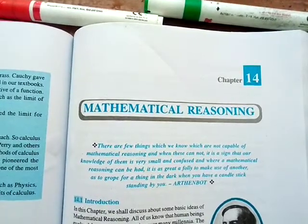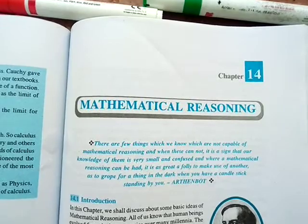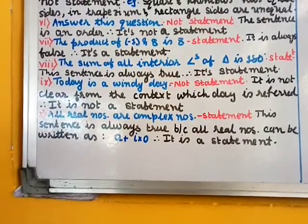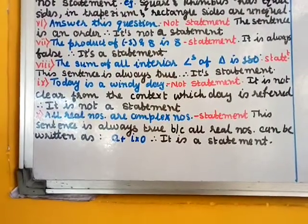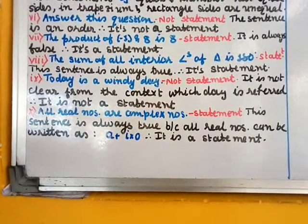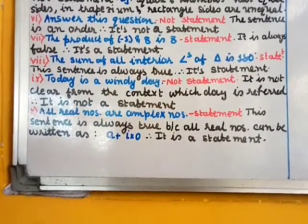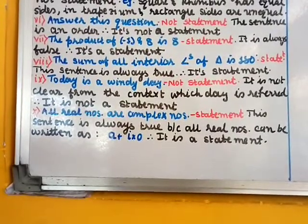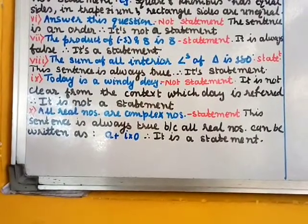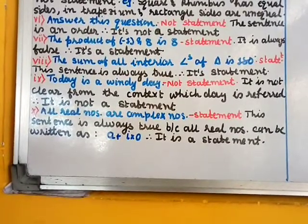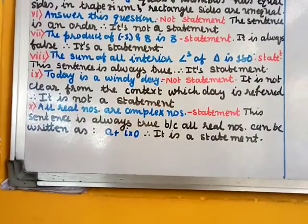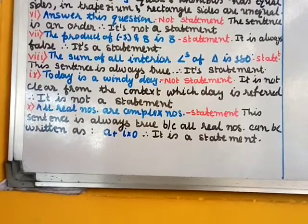We shall begin Chapter 14 of Mathematics Class 11: Mathematical Reasoning. In this chapter, we shall discuss some basic ideas of mathematical reasoning. All of us know that human beings evolved from lower species over many millennia. The main asset that made humans superior to other species was the ability to reason. How well this ability can be used depends on each person's power of reasoning. Here we shall discuss the process of reasoning, specially in the context of mathematics.